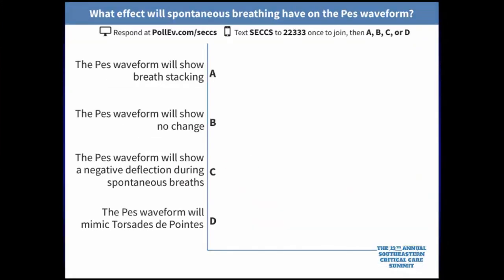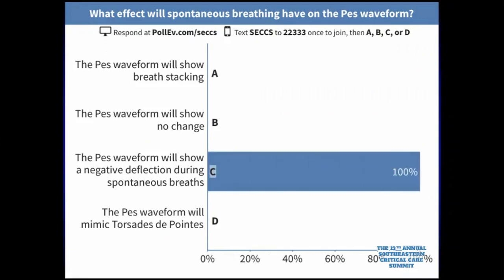Next question: what effect will spontaneous breathing have on your esophageal pressure waveform? The answer is C — it will produce a negative deflection when the patient takes a breath. Airway pressure will still be positive; the spontaneous breath will cause a pressure drop on the esophageal waveform.